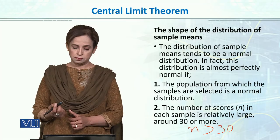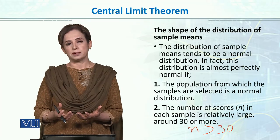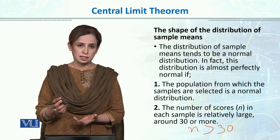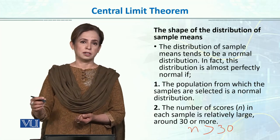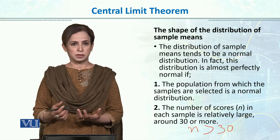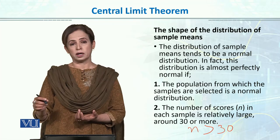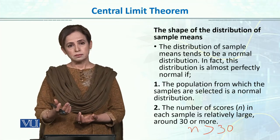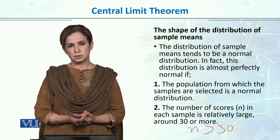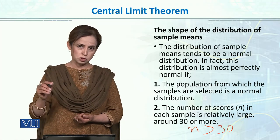There are two conditions that determine the shape of the sampling distribution. First, if the population from which samples are selected is already normally distributed, then the distribution of sample means will also be approximately normal. Second, if you increase the sample size n — drawing larger samples and plotting their means — the distribution will become perfectly normal because of the larger n size.